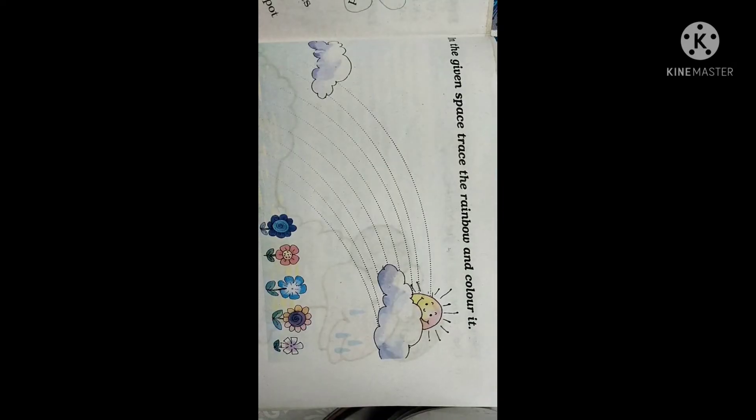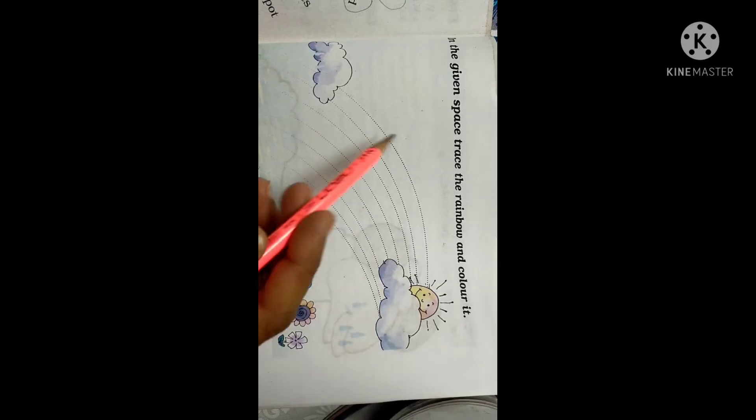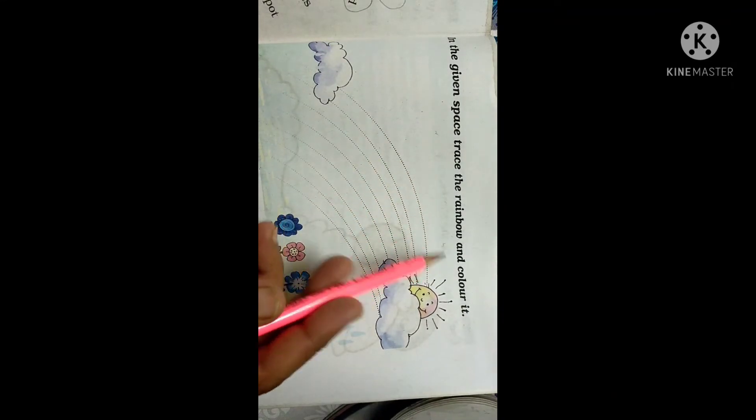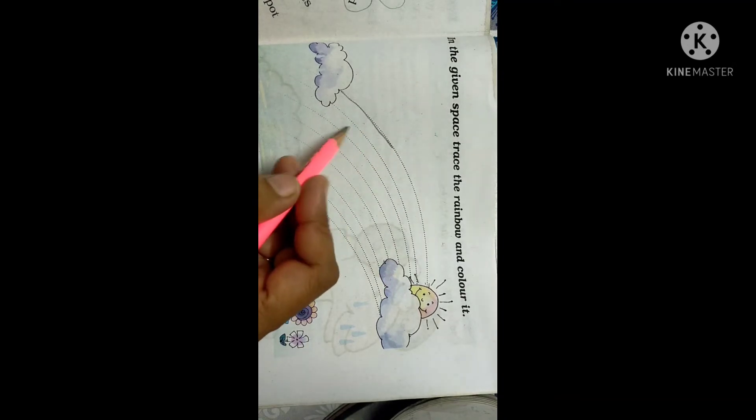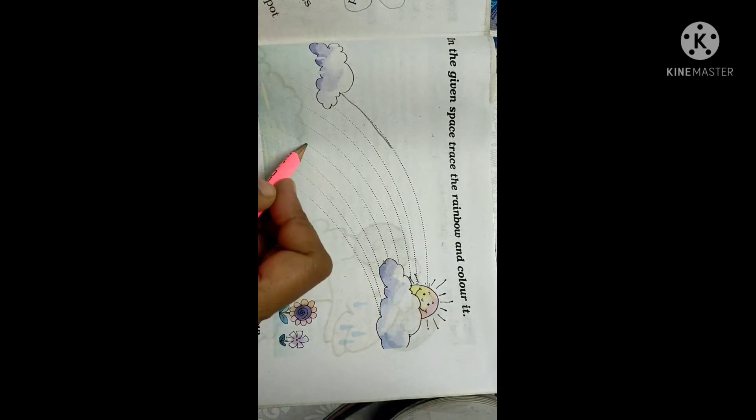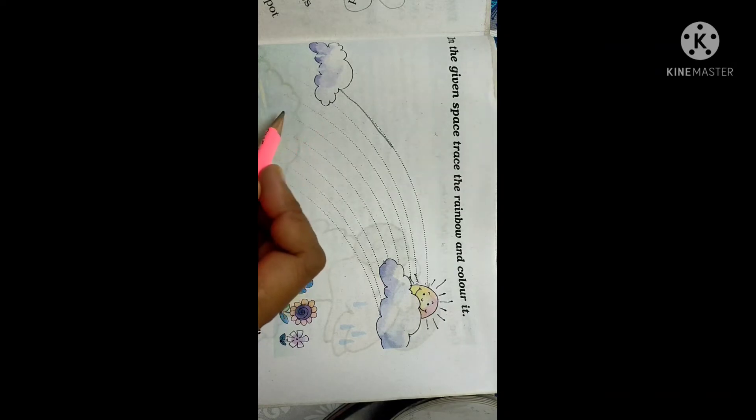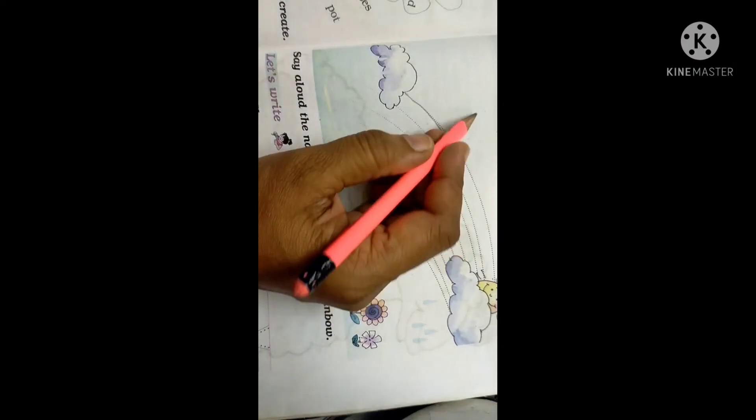Now fun time. What you have to do? In the given space, trace the rainbow and color it. First of all you have to trace in this way. Okay. Afterwards, here you have to use the rainbow colors. All the seven colors you write. Fill up here. So this one is the homework for you.